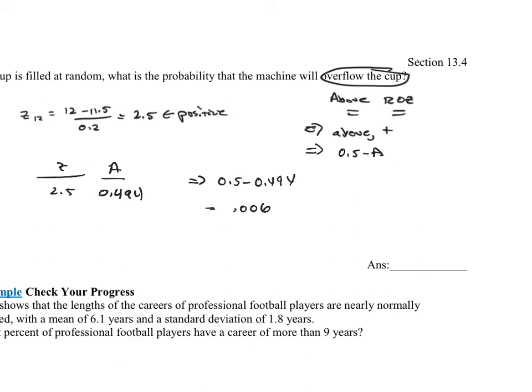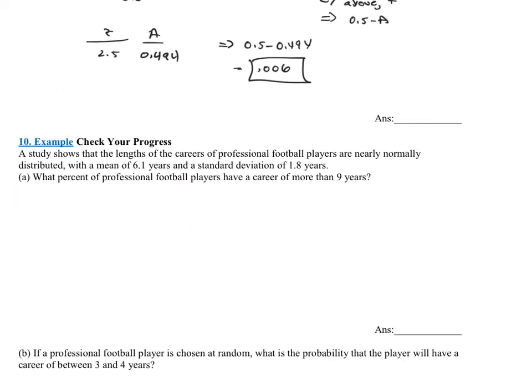And it says, what is the probability? Because it wants the probability, it wants the decimal version, not the actual number. So what is the probability that the cup overflows? It's 0.006. It's very, very low.